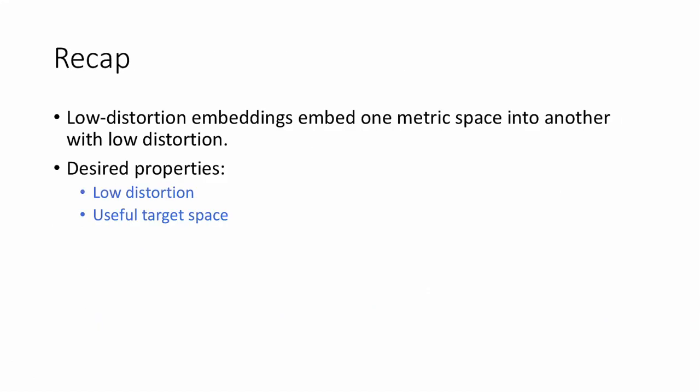Okay, so those are the basic definitions that we'll need going forward to talk about metric embeddings. To recap, low distortion embeddings embed one metric space into another with low distortion. That is, the distances between points are approximately preserved. Some desired properties of low distortion embeddings include low distortion certainly, so we don't want to mess up distances too much, and also having a useful target space.